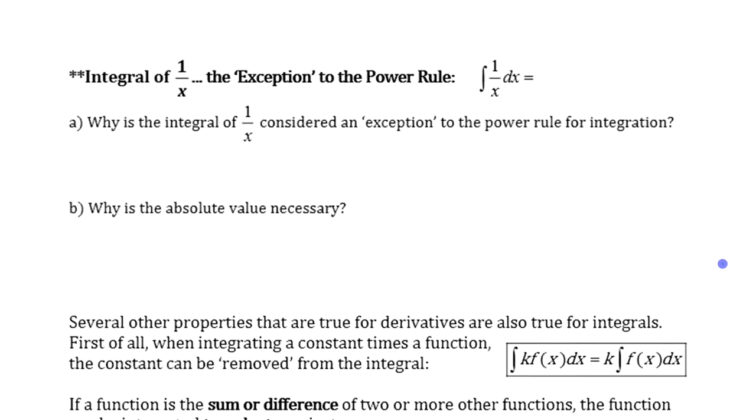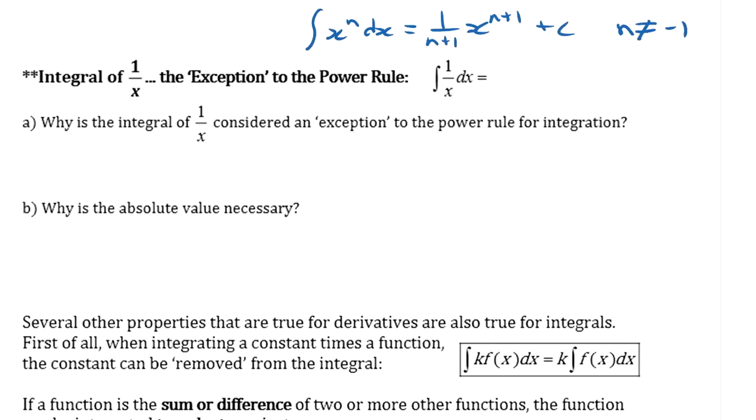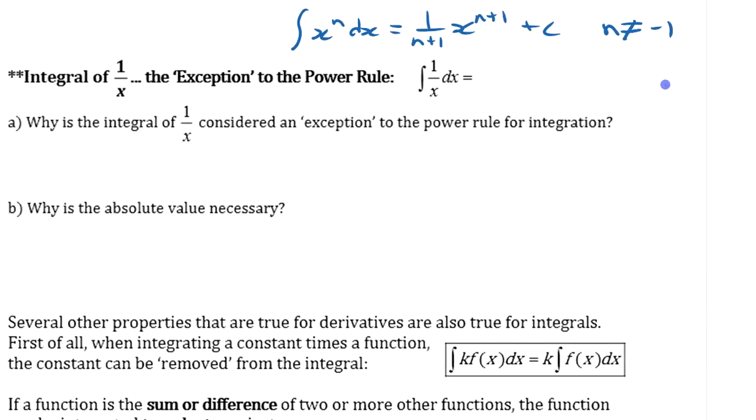The exception of that power rule where you have integral of x to the n dx is x to the n plus 1 times 1 over n plus 1 plus a constant except n cannot be negative 1. Think about what would happen here, right? If you're working with this, we'll write this over on the side here if we can fit it. If you have x to the 3, the integral is 1 quarter x to the 4th. The integral of x to the 2 is 1 third x to the 3rd. Integral of x or x to the 1 is 1 half x squared. Integral of x to the 0, that's like a constant, right? That's just 1. The integral of that is, well, you could say it's x to the 1 times 1 over 1 if you really want to, but it's just x.